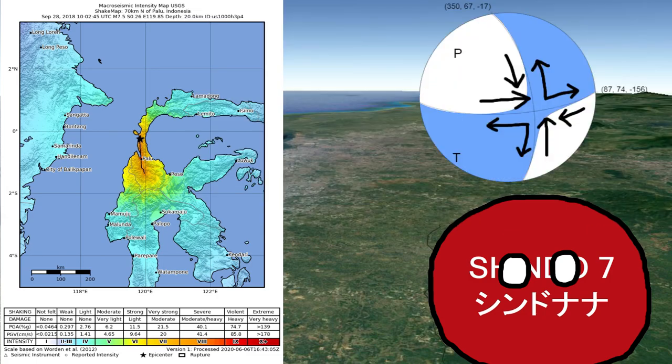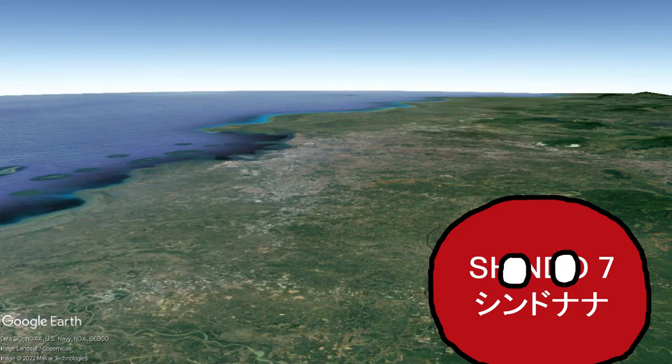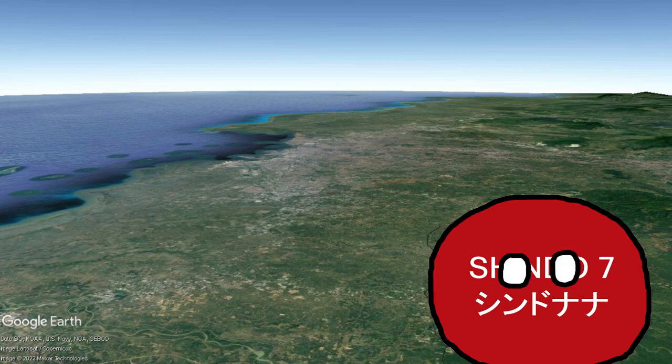Take the 2018 Palo earthquake. The shake map clearly shows that it's a left lateral strike-slip fault on a north-south orienting fault. I could get into the science behind it, but it's complicated. I know how it works, but animating that would take way too long, so I will skip that for now.